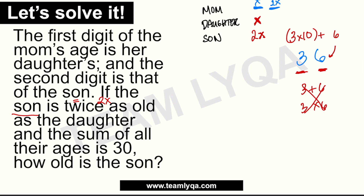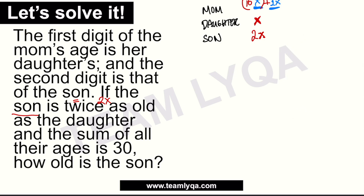So to get the mom's age and plug it into the equation, we multiply the first digit — which is x — by 10. That gives us 10x, then we add the second digit, which is 2x. So the mom's age is 10x + 2x.